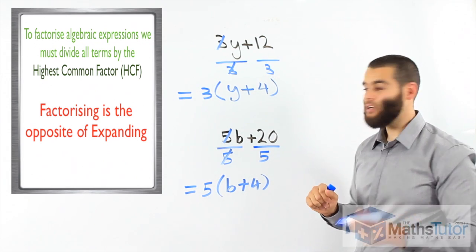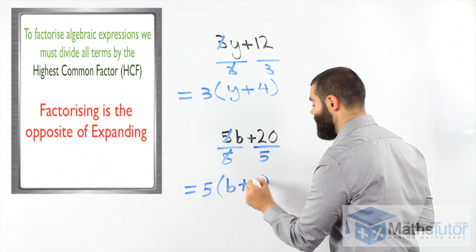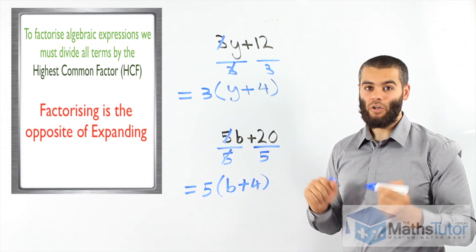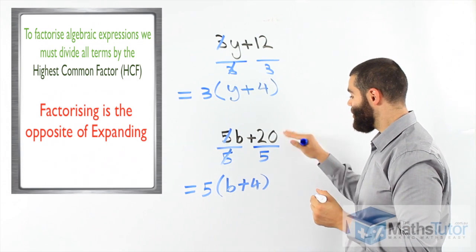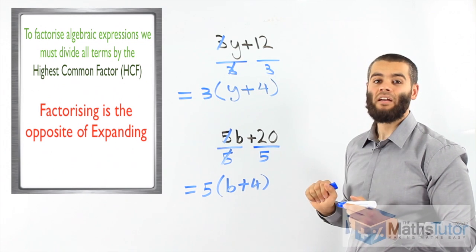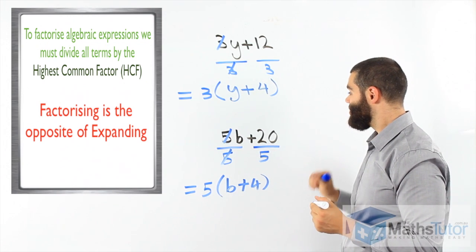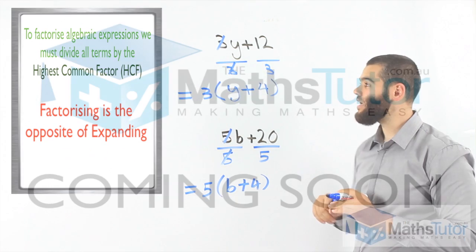We want to check, is it correct, 5 times b, 5b, 5 times 4 is 20, correct, we factorise correctly because we checked and we can actually go back and see we got the same thing. So, factorising is the opposite of expanding.